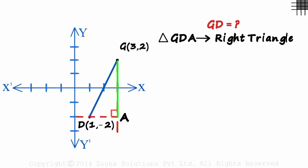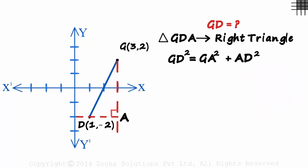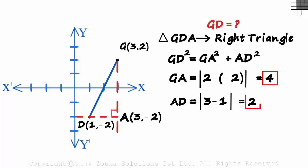So if we find out GA and AD then we can easily find GD using the Pythagoras theorem. We can easily find GA and AD as they are parallel to the axis. Based on the Pythagoras theorem, GD squared will equal GA squared plus AD squared. Now to find GA and AD we need to find the coordinates of A. That's easy! X coordinate of A is 3 and the Y coordinate is minus 2. Using the concepts we learnt earlier, we get GA and AD as 4 and 2. GA is the absolute value of the difference in the Y coordinates of G and A. And AD is the absolute value of the difference in the X coordinates of A and D.